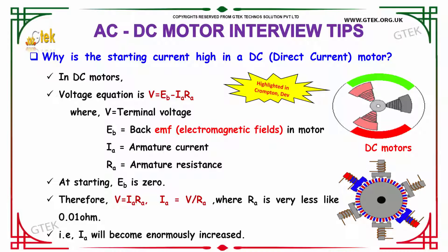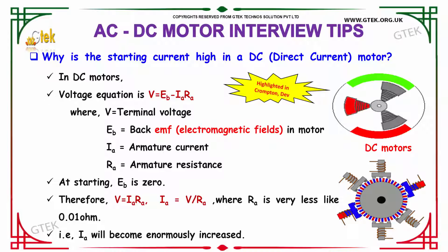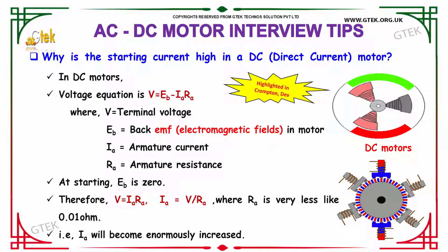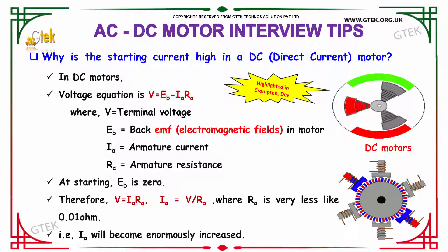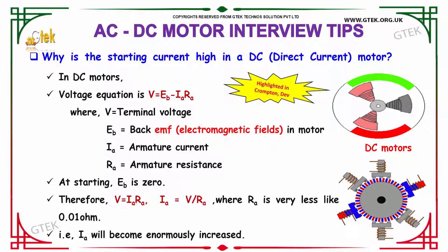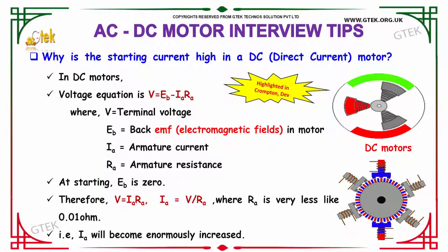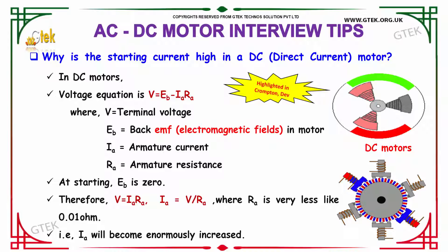At starting, Eb — the back EMF in the motor — will be zero. Therefore V = Ia × Ra, which gives Ia = V / Ra. Since Ra is very less, like 0.01 ohm, Ia will become enormously increased. So this is the reason why the starting current is high in the DC motor.